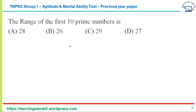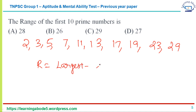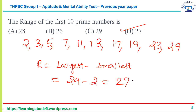The next question: find the range of the first 10 prime numbers. Prime numbers have exactly two factors — one and itself. The first 10 prime numbers are 2, 3, 5, 7, 11, 13, 17, 19, 23, and 29. Range is the difference between the largest and the smallest: 29 minus 2 equals 27. Answer option D — 27.